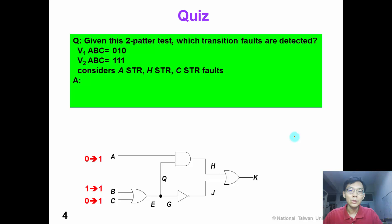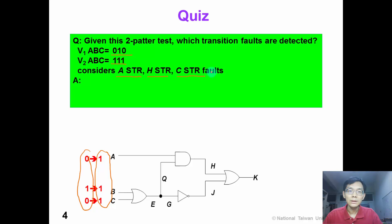Now it's time for you to practice. Given the same circuit and these two test patterns — V1 equals (0, 1, 0) and V2 equals (1, 1, 1) — consider three transition delay faults: A slow-to-rise, H slow-to-rise, and C slow-to-rise fault. Please tell us which faults can be detected by this pair of test patterns. Now pause the video and work on this problem.